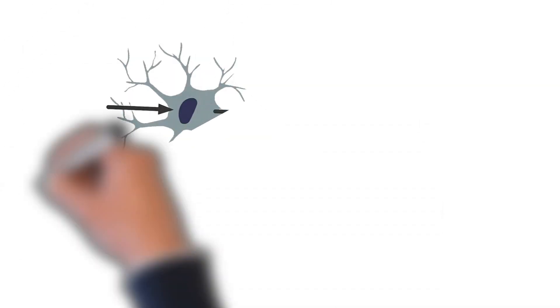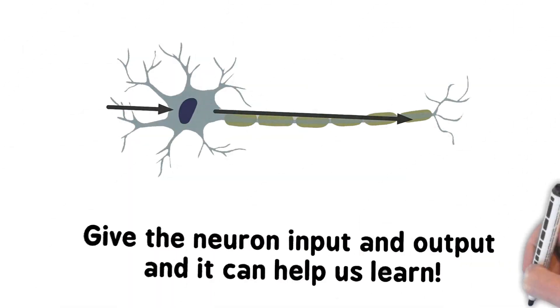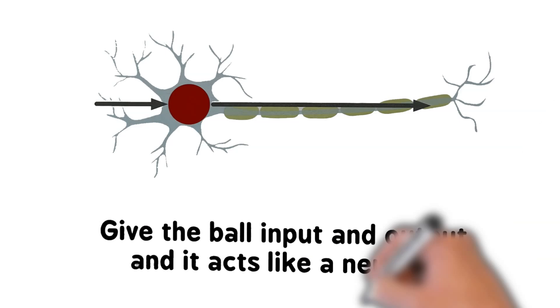Give the neuron input and output and it can help us learn. Give the ball input and output and it acts like a neuron.